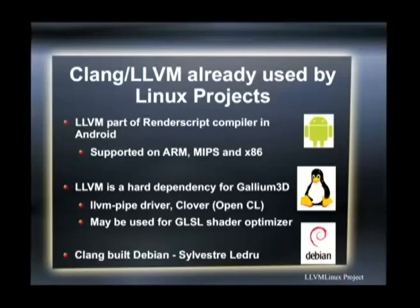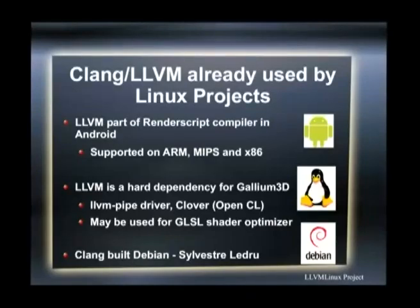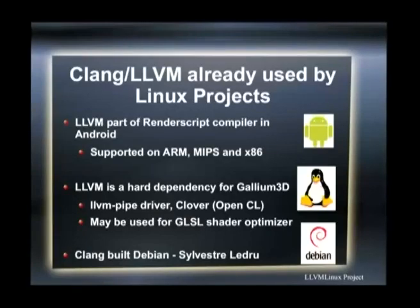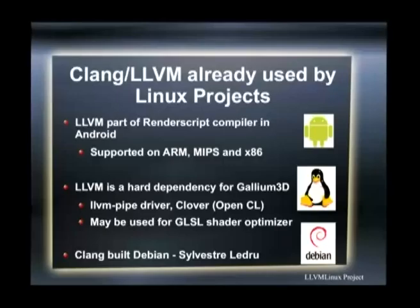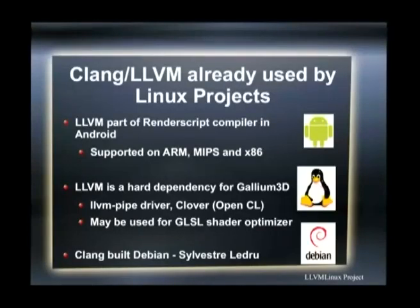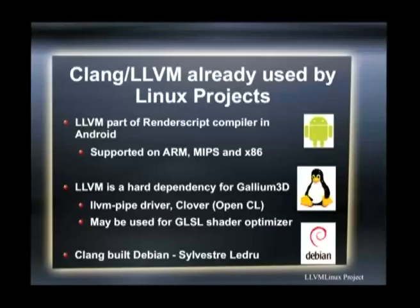LLVM is also part of a few more projects. For example, it's an integral part of RenderScript in Android. It's part of the Gallium 3D engine in multiple ways. There is also a full build of Debian with Clang — tomorrow Sylvester will talk about this in more detail. There is also a FreeBSD port, and Minix 3 is using Clang as well.